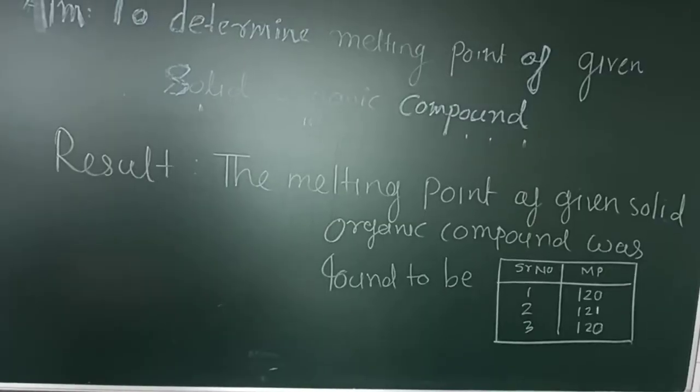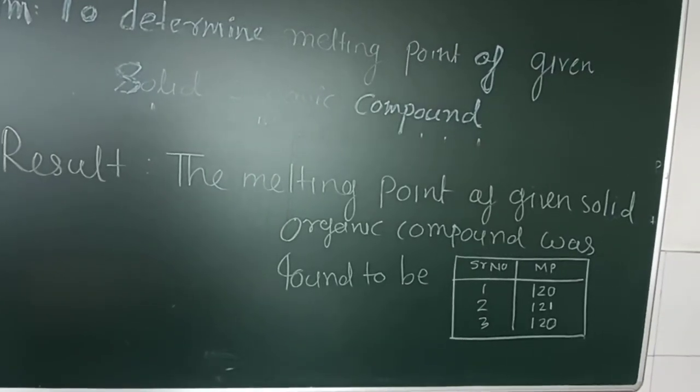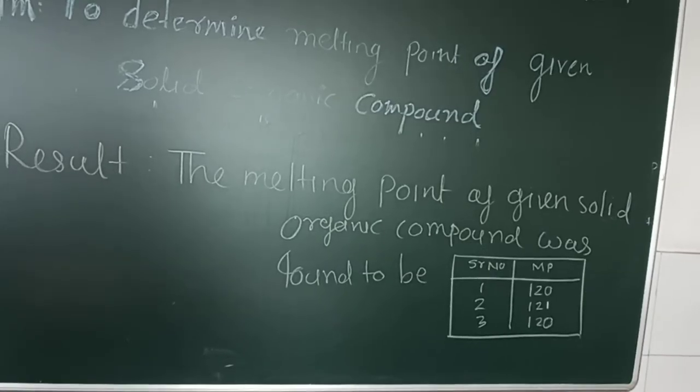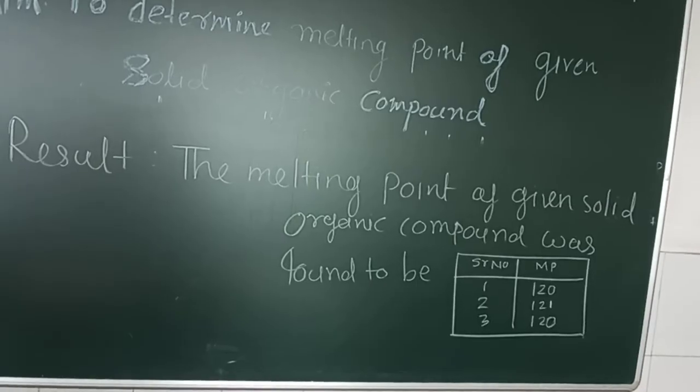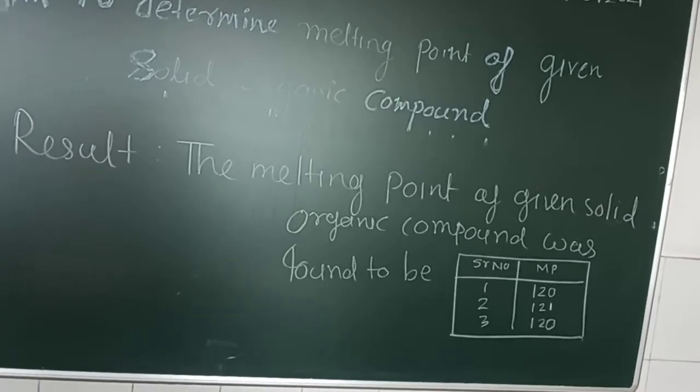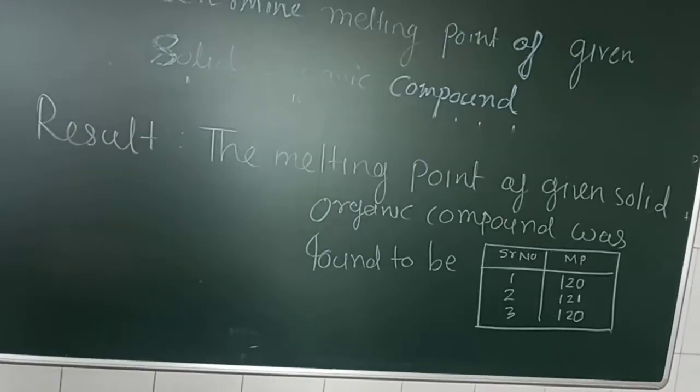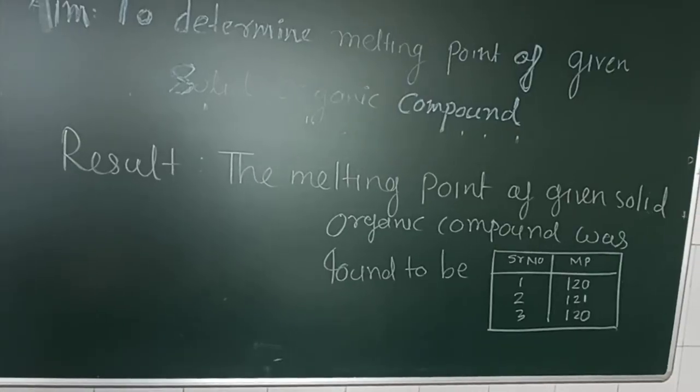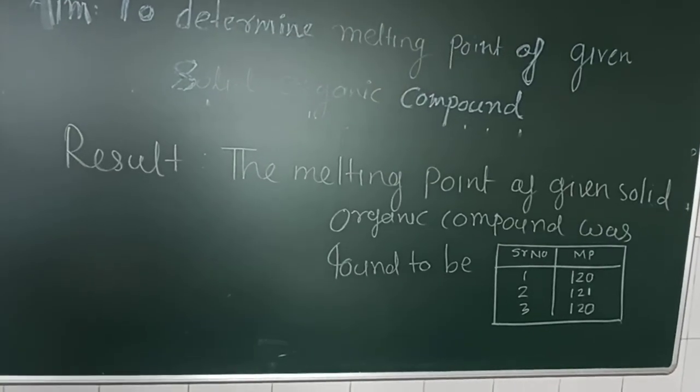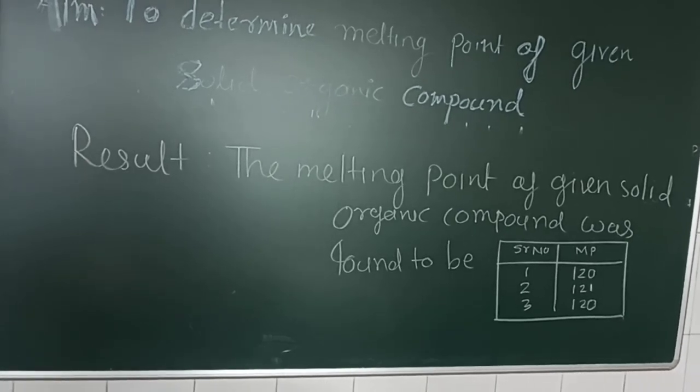And after that, the result: the melting point of given sample of organic compound is 121 degrees Celsius. The melting point of given solid organic compound as per official book is 121 degrees Celsius. This is a sample of benzoic acid and we got a sharp melting point of benzoic acid. That means our compound is pure. Thank you.